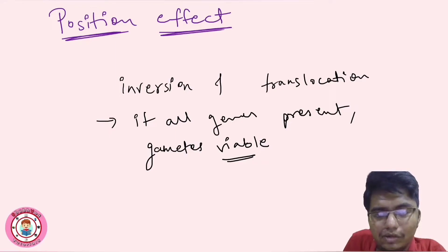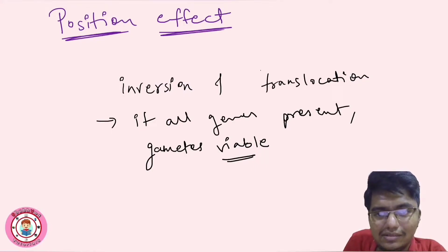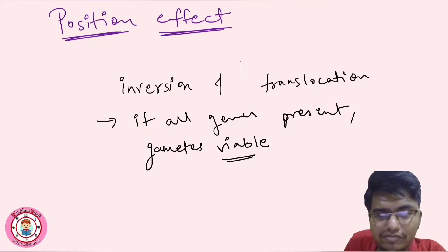But when the gametes are viable — when all genes are present — we still see some disorders happening, or we can say the phenotype is changed. So why does this happen? This is because of position effect.